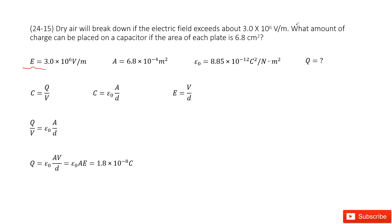It asks you what amount of charge can be placed on a capacitor if the area of each plate is 6.8 centimeters squared. So we write down the A. Now we know in this case what amount of charge can be placed just in the case the air will not break down.